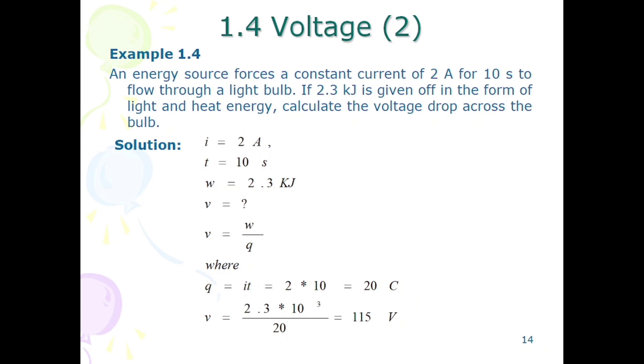Voltage drop equals work done divided by charge. Charge is not given, so we have to find it first. Charge is the product of current times time. Current is given as 2 amperes, time is given as 10 seconds, so charge equals 20 coulombs.